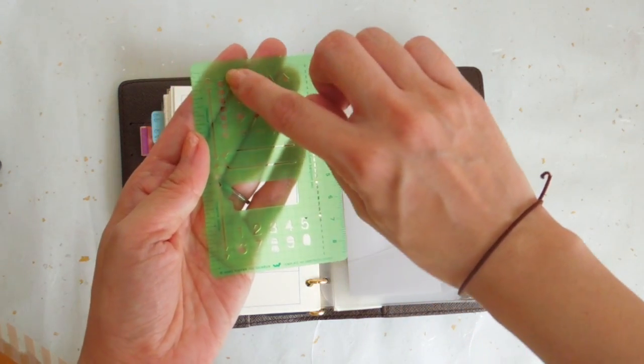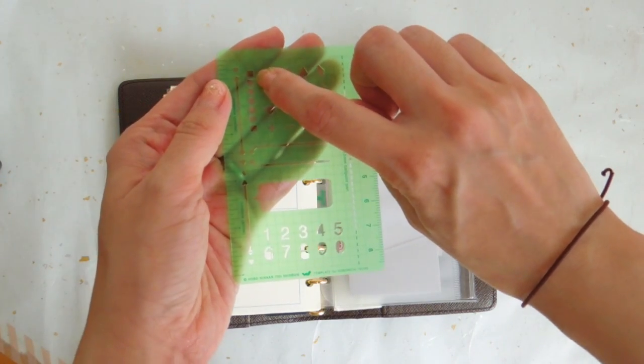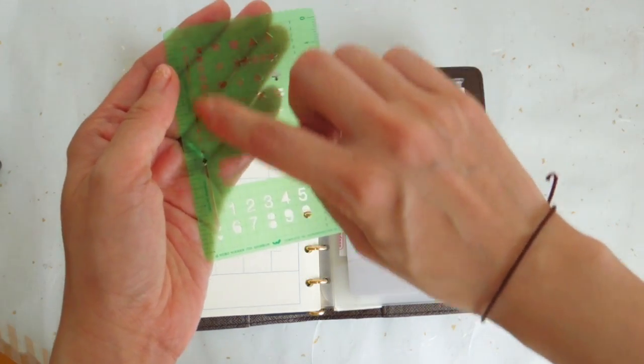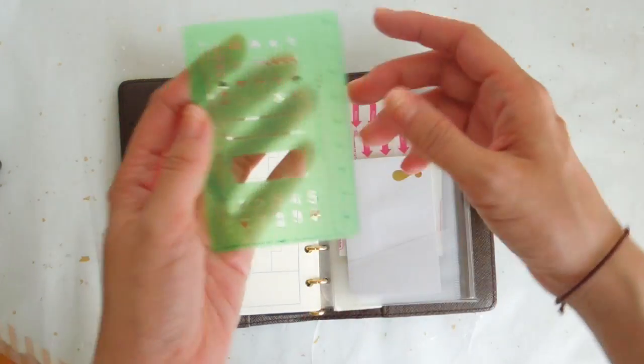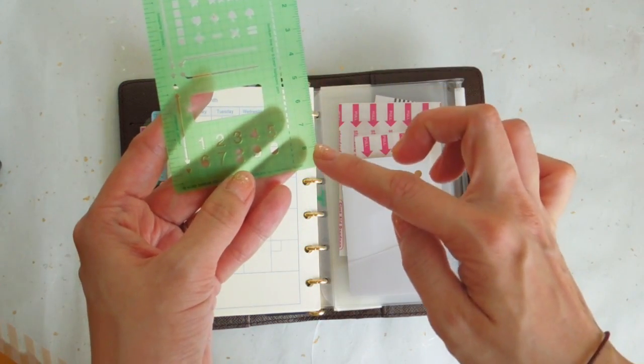I use this often for the to-do tick boxes. I like to use this stencil for that. It has inches on one side and centimeters on the other side.